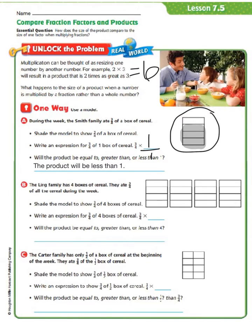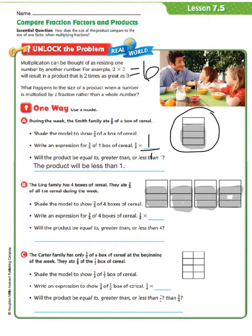Now let's look at part 2. The Ling family has 4 boxes of cereal — you can see 1, 2, 3, and 4 boxes. They ate 3 fourths of all the cereal during the week, which means they ate 3 fourths of this box, 3 fourths of this box, 3 fourths of this box, and 3 fourths of this box. Let's shade the model to show 3 fourths of each of the 4 boxes.